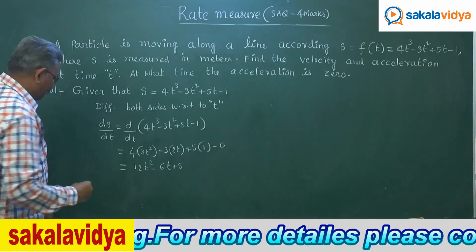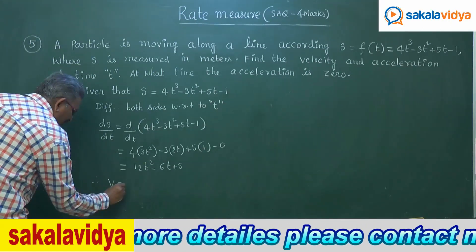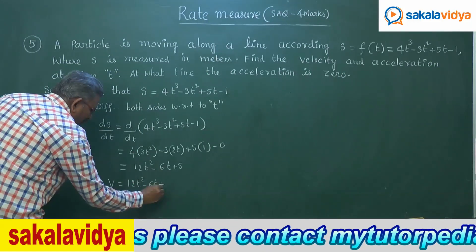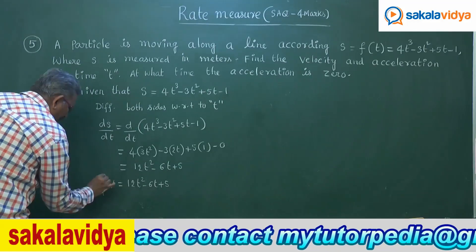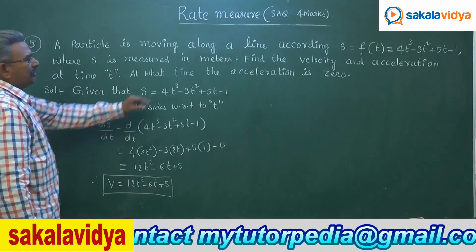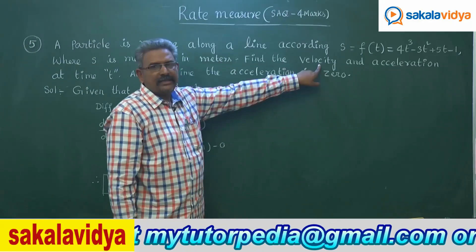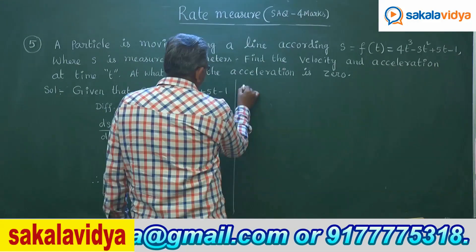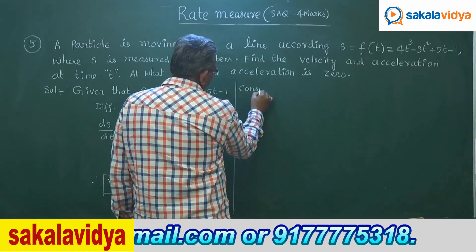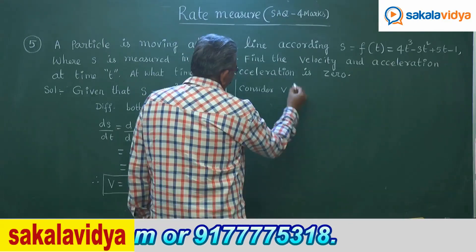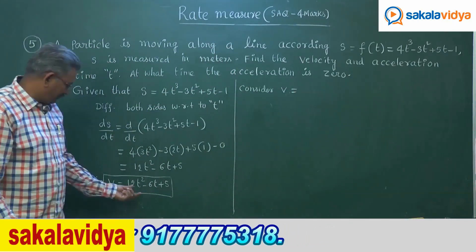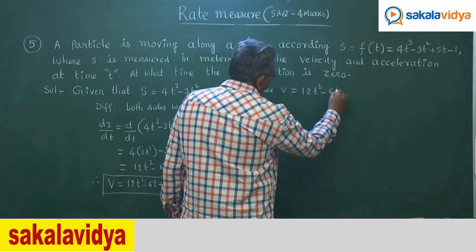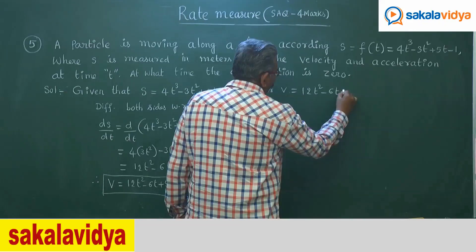So the velocity v = ds/dt = 12t² - 6t + 5. Now we need to find the acceleration. Recall that velocity v = 12t² - 6t + 5. Differentiate both sides with respect to t.